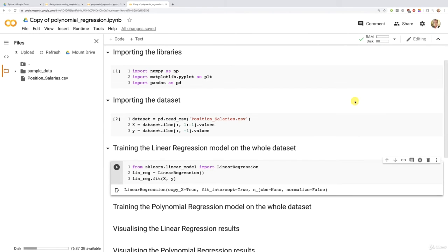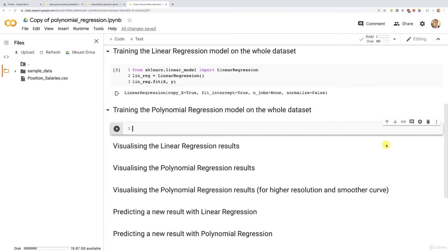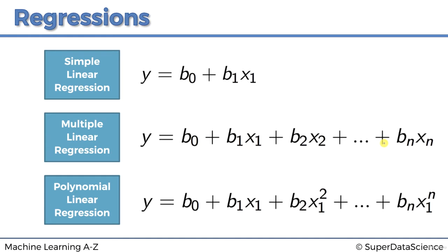Now we're going to focus on the heart of the matter, which is the polynomial regression model. What we've just built so far has one feature — the position levels. Now we're going to create a multiple polynomial regression model, but instead of having different features X1, X2, and Xn, these features will be X1, X1 squared, and X1 at the power of n. Polynomial linear regression can learn nonlinear correlations, but we call it polynomial linear regression because there is a linear combination of the powered features X1, X1 squared, and X1 at the power of n.